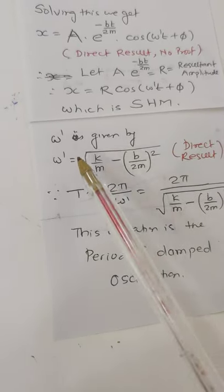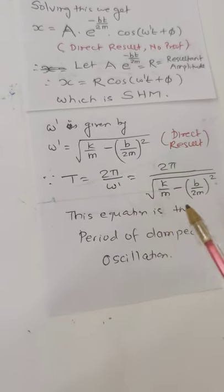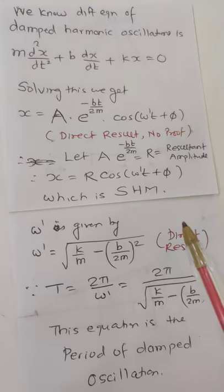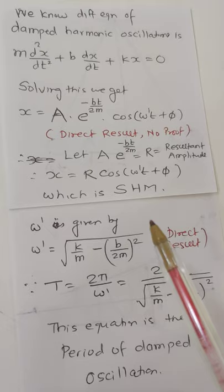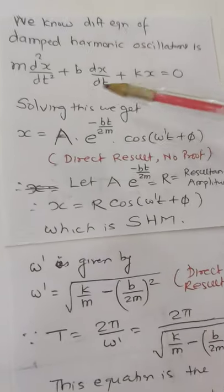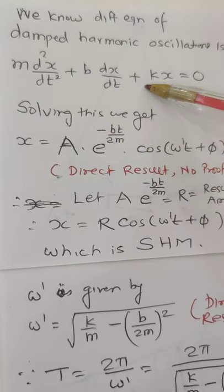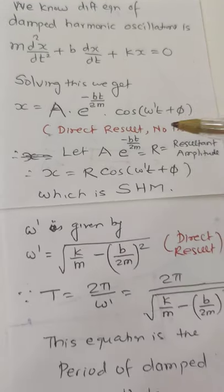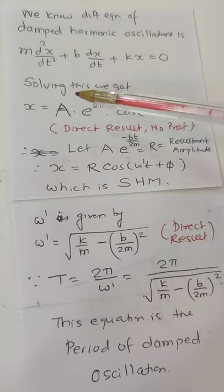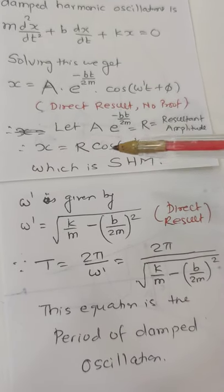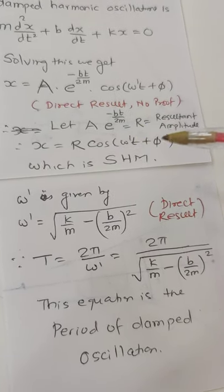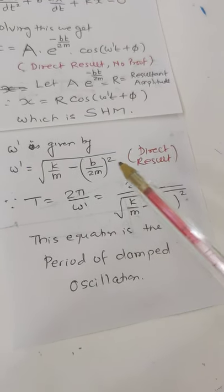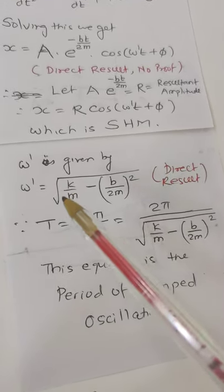T = 2π/ω', equal to 2π upon this value. So, ω' is given by—this is also direct result. You know, ω is √(k/m), that is the value for us.